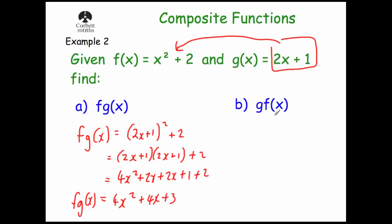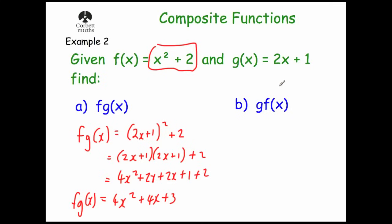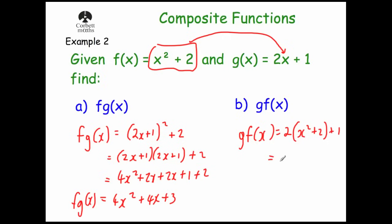This time we're going to find gf of x. We take our f of x and put it into the function g, replacing the x in g with f of x. So gf of x equals 2 bracket x squared plus 2 close bracket plus 1. When we expand that, we get 2x squared plus 4, plus 1. So gf of x equals 2x squared plus 5.